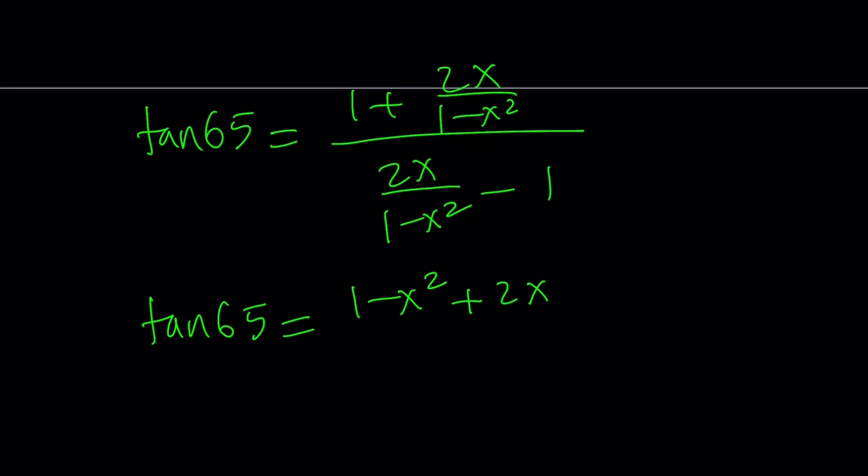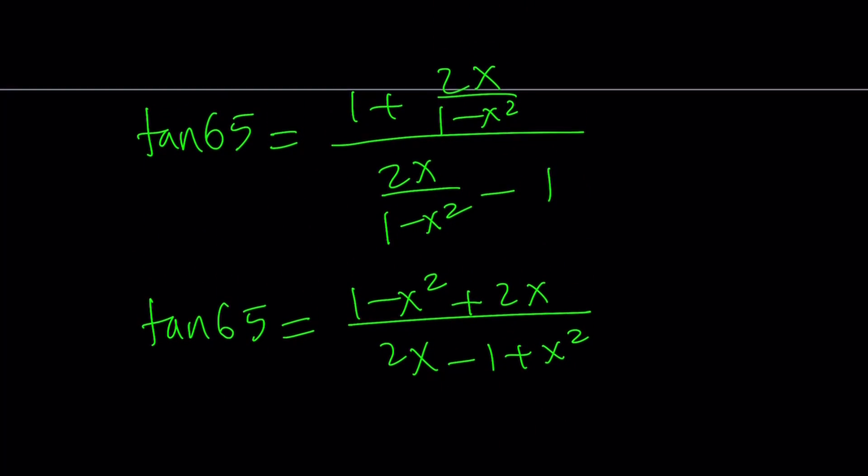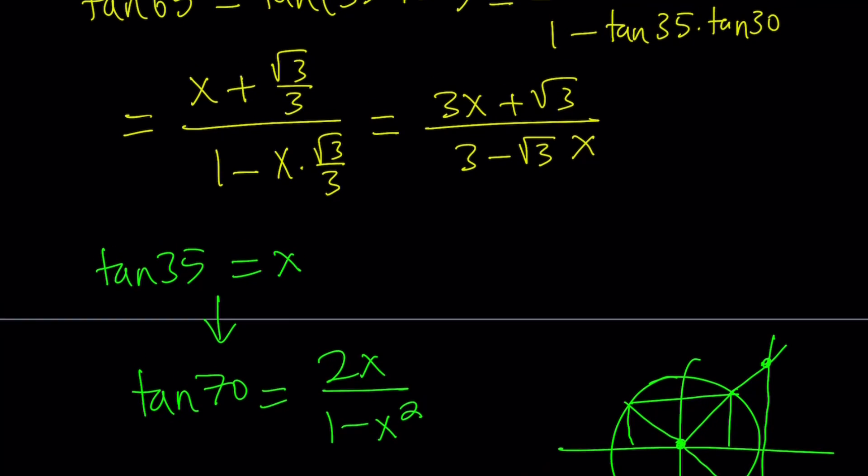And, by making a common denominator, I get 1 minus x squared, or just multiply the top and the bottom by 1 minus x squared, which is a little easier, which is the same thing, by the way. But, anyways, 2x minus 1 plus x squared. Of course, you can write it in the standard notation, so on and so forth, but let's go back and take a look at the first value we found.